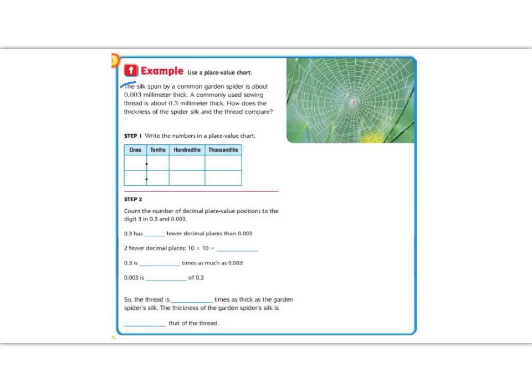Let's chart our first number. We have 0.003, three thousandths. And our other number is 0.3, three tenths. Next let's look at how we're going to compare these two.